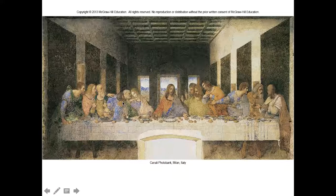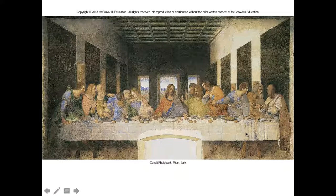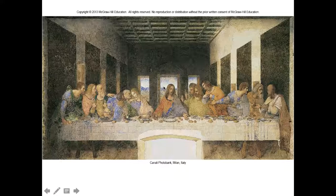Atmospheric perspective is the third way we define space. You can't see it that well in this painting because it's faded. But typically, things in the foreground are sharper and darker, and things in the background are fuzzier and lighter. It has to do with the atmosphere — the atmosphere has particles in it, water particles, and they make things further away look fuzzy or loose.